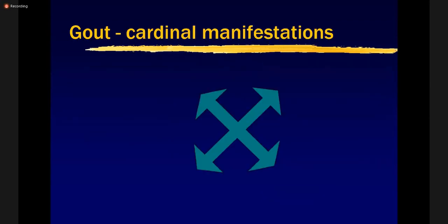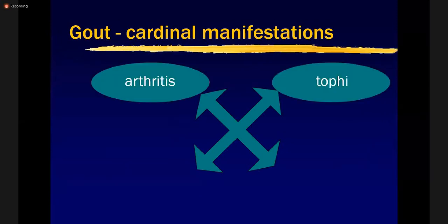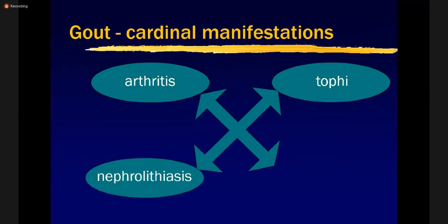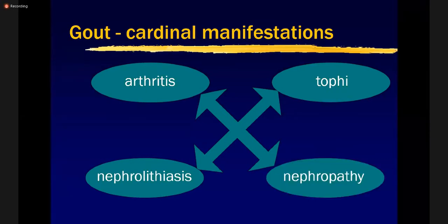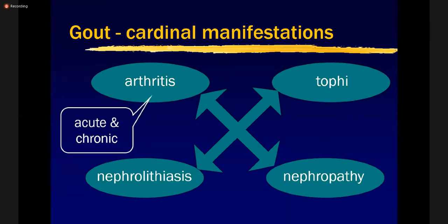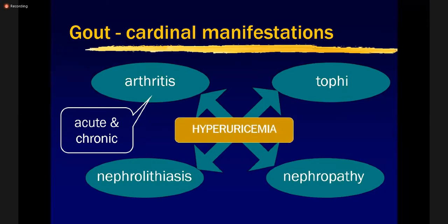Cardinal manifestations of gout include arthritis, presence of tophi, and deposition of uric acid that may lead to nephrolithiasis and nephropathy. Arthritis is one of the most important cardinal manifestations of hyperuricemia or gout, and it can be acute or chronic. Our treatment options will be entirely different depending on whether this is an acute attack or a chronic case.